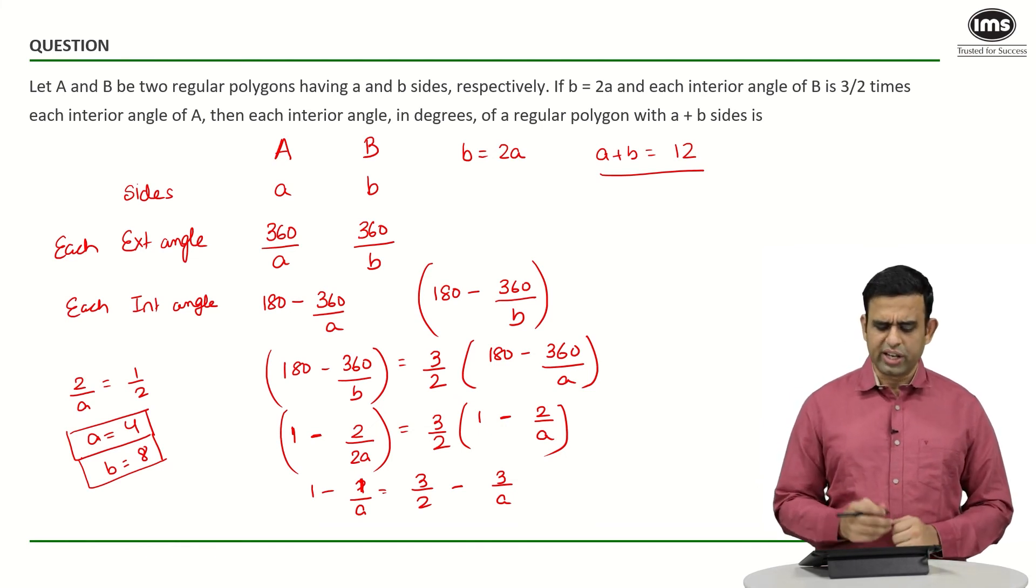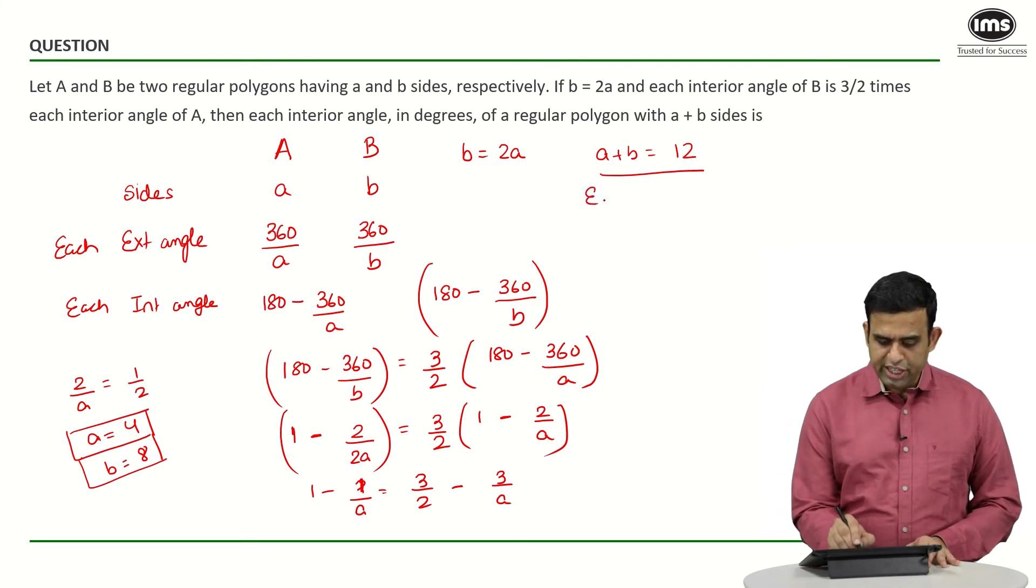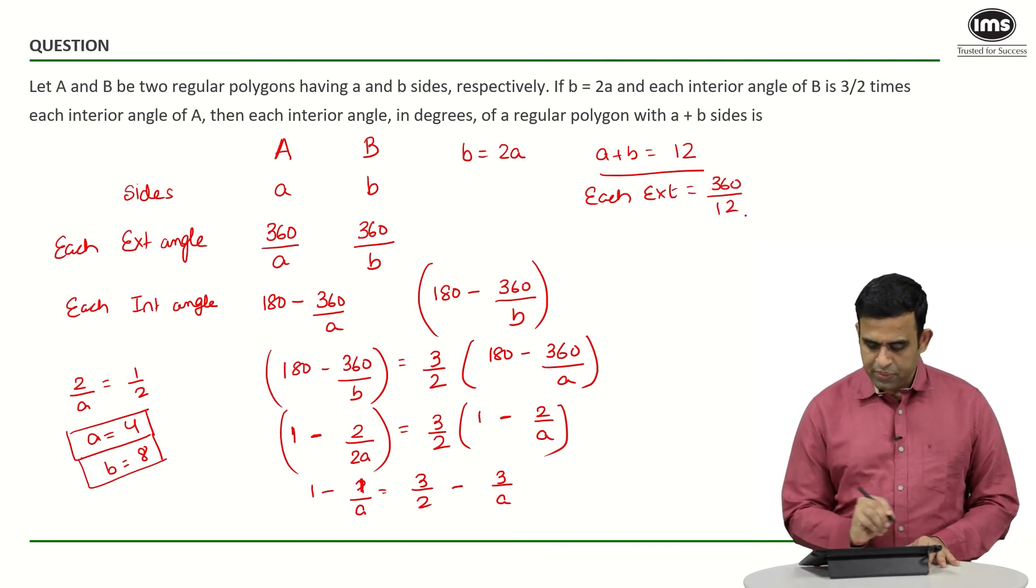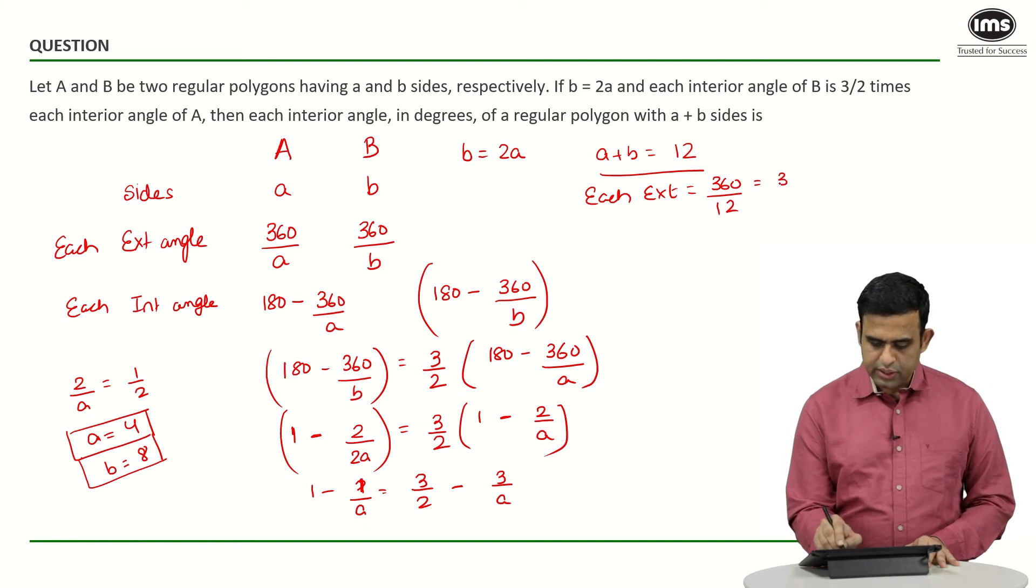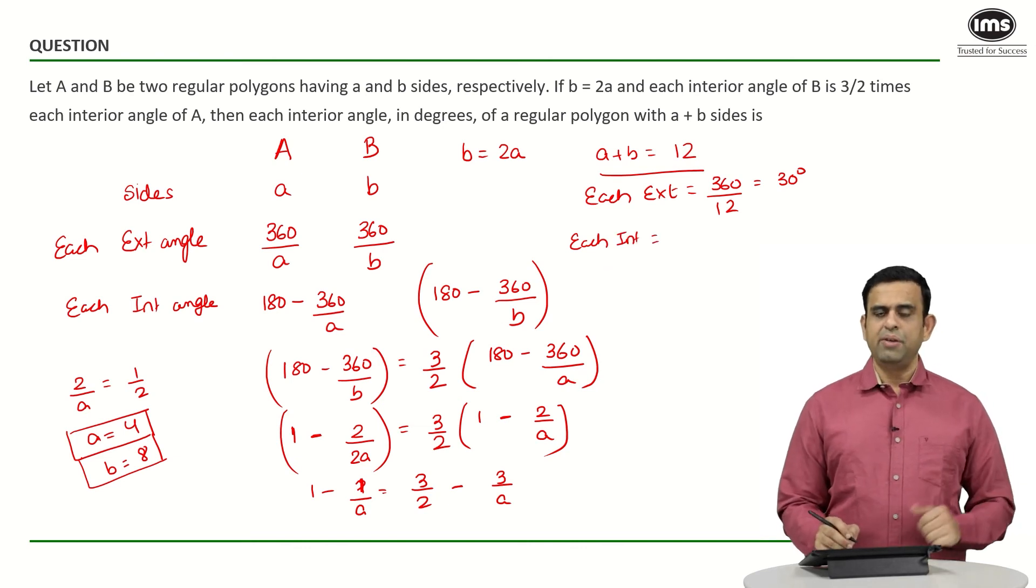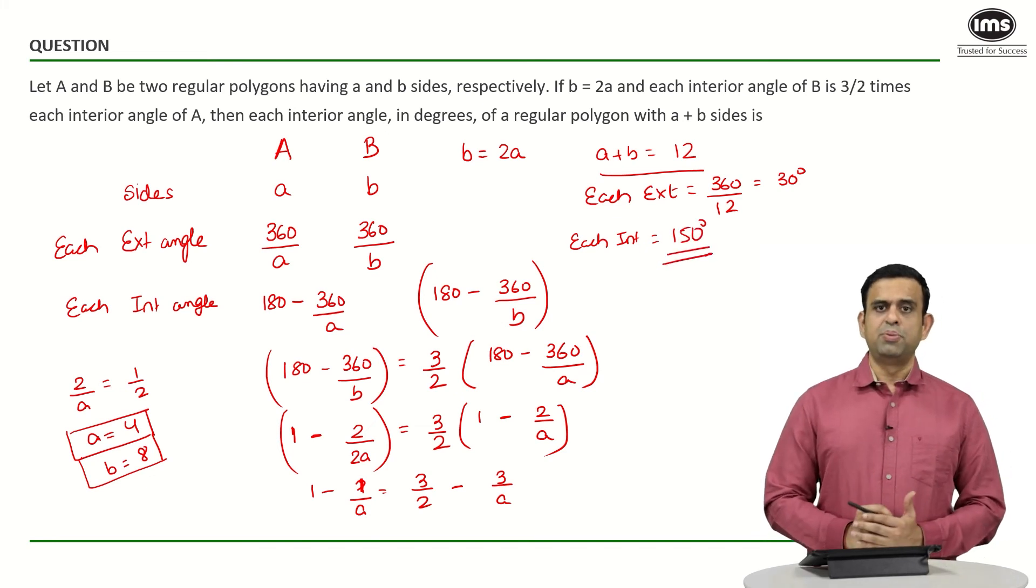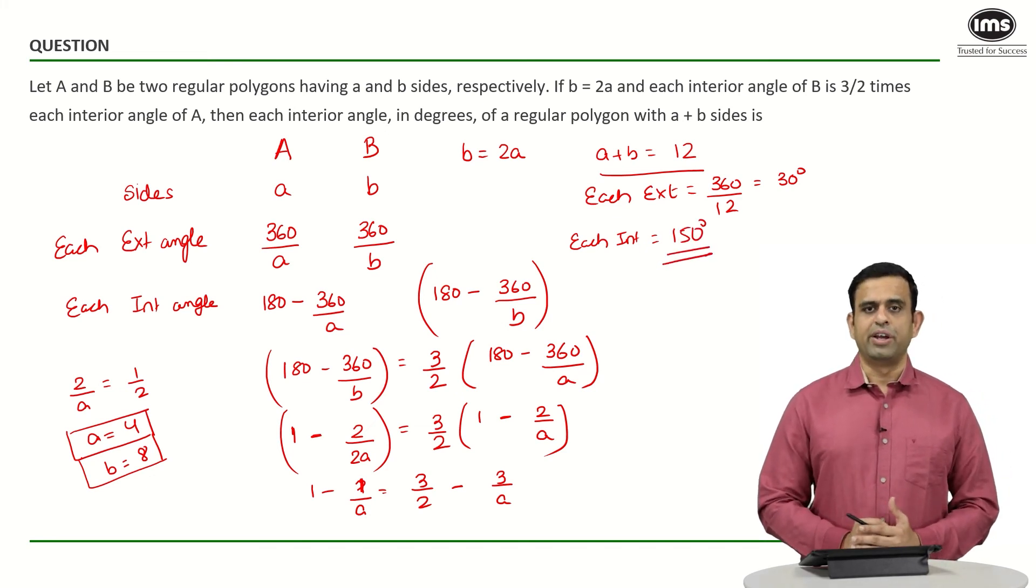Now this polygon has 12 sides, so each exterior angle should be 360 divided by 12, which is 30 degrees. Hence, each interior angle is 180 minus 30, giving us 150 degrees. The answer for this question is 150.